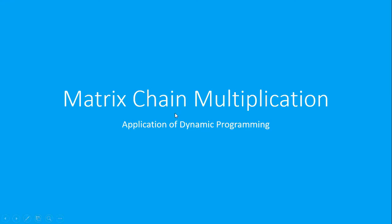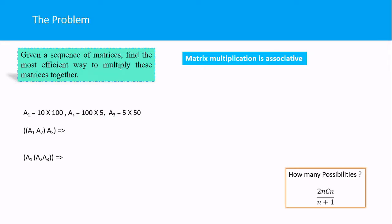Matrix chain multiplication is one of the applications of dynamic programming. The problem is that given a sequence of matrices, you have to find the most efficient way to multiply these matrices together. Dynamic programming is used to find the optimal solution.